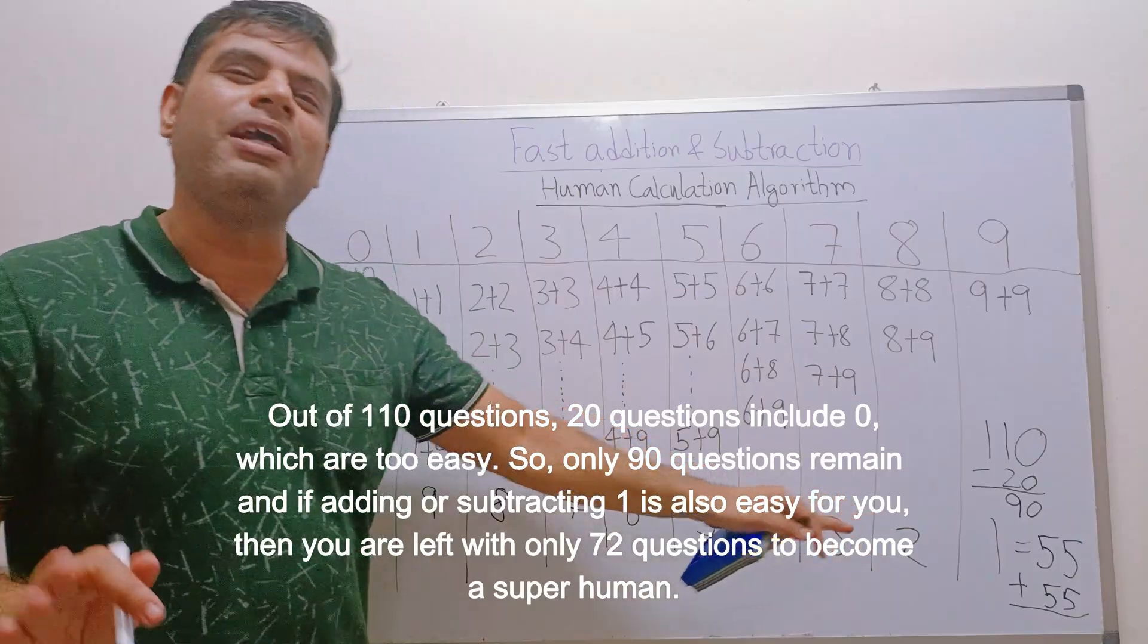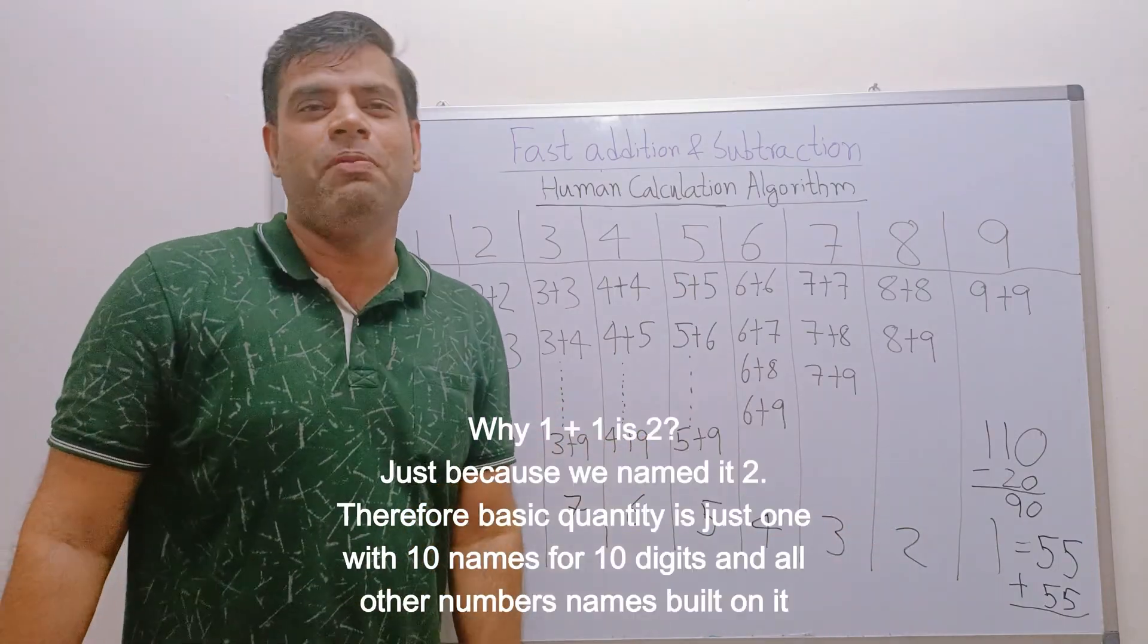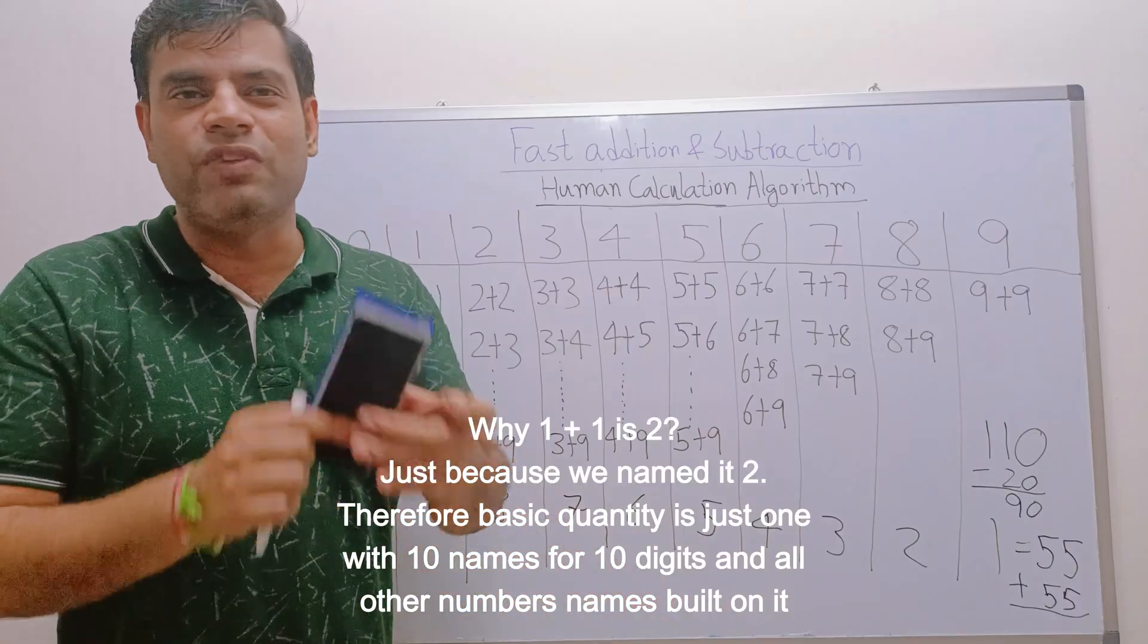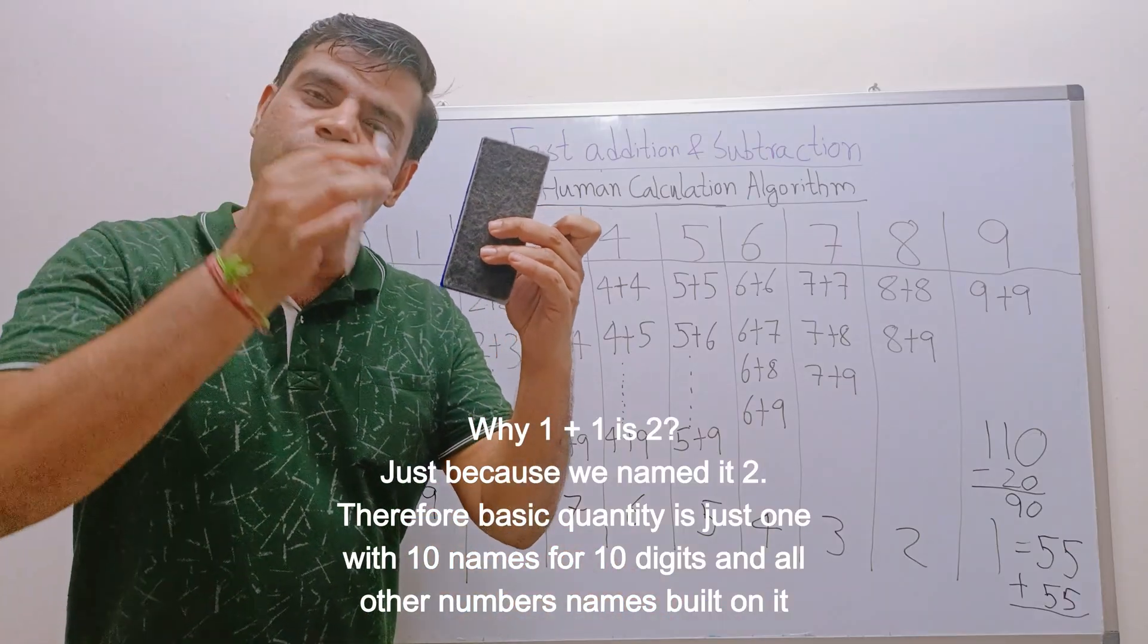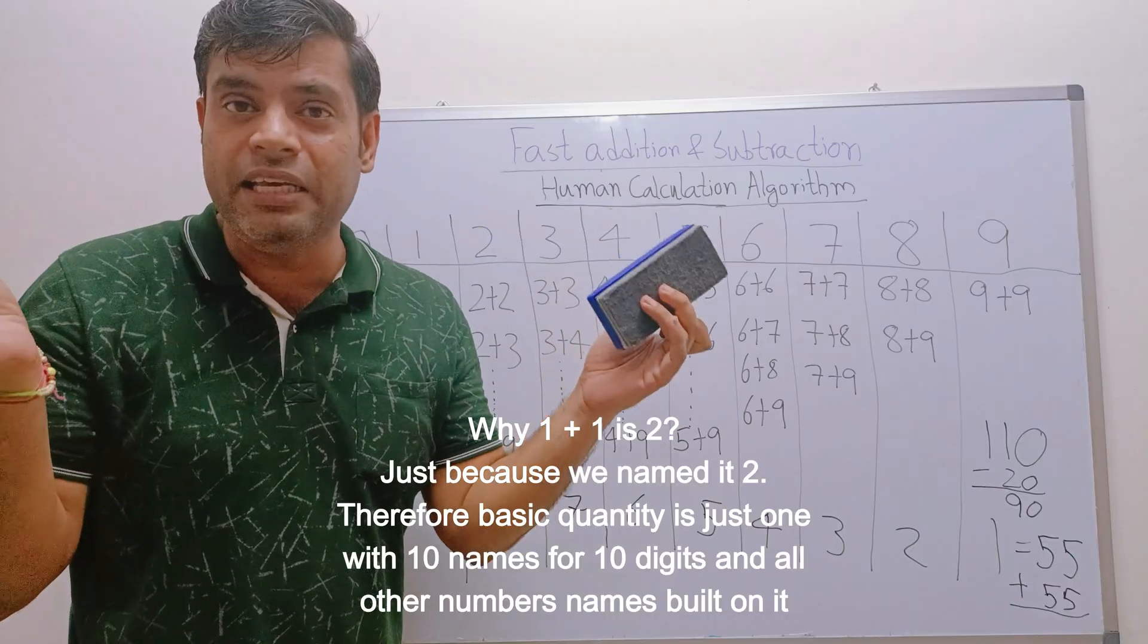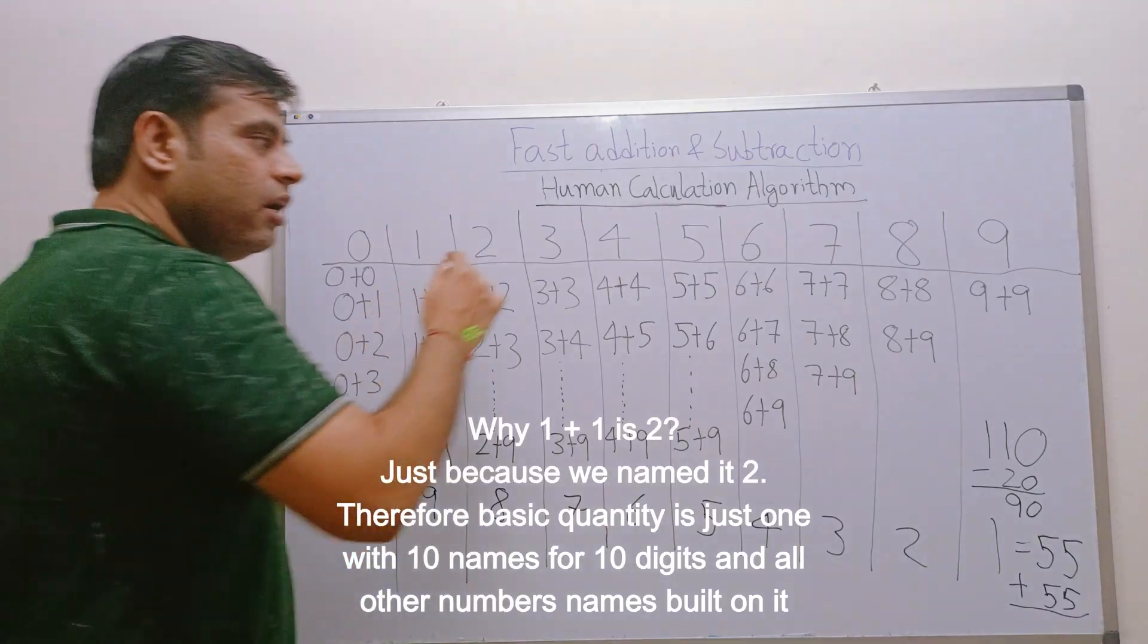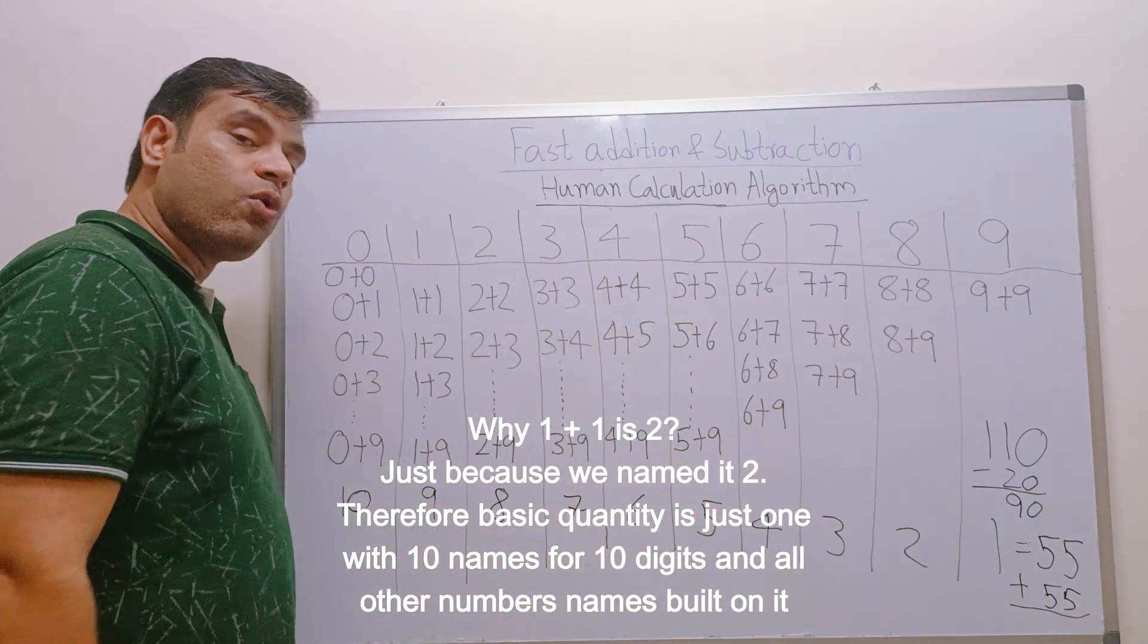But thing is, this 90, again please don't memorize, try to understand. When we say 1 plus 1, why 1 plus 1 is 2? Because that's how we made a number. If this is one and I put another one item here, I call it two. I have just given the name, I could have given any other name but I have given the name two. So that's how the counting is done. So once you learn all these things, now question is how to learn.